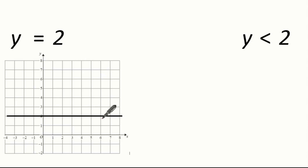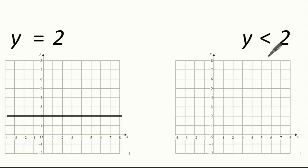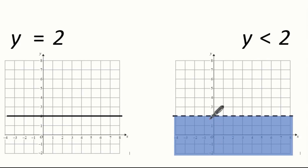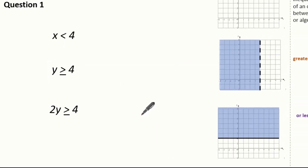So let's now look at the inequality y is less than 2. This does not include the 2, so we must use a dotted line. We want all the values which are less than 2, so I shade the region which is below the dotted line, as this illustrates all the y values which are less than 2. A nice little hint when looking at y is to look for a horizontal line.